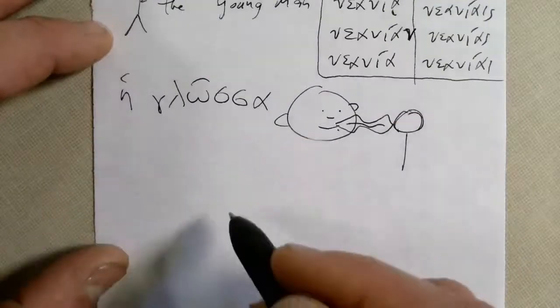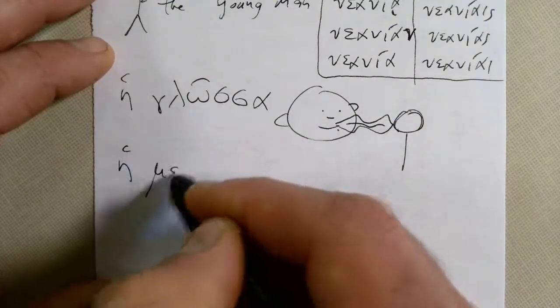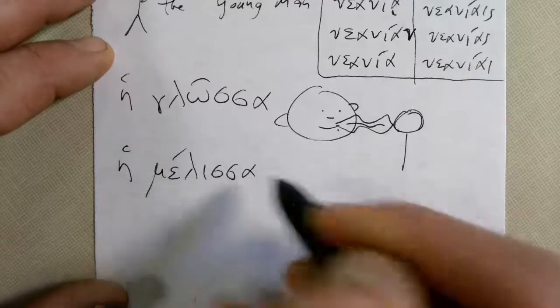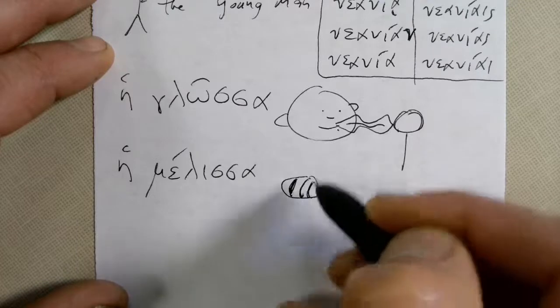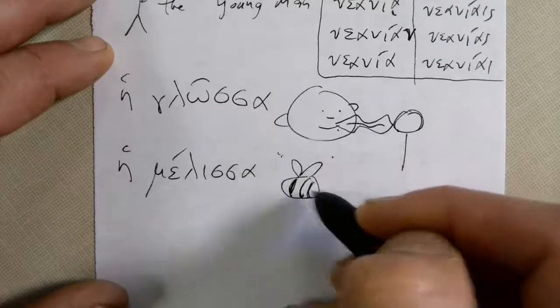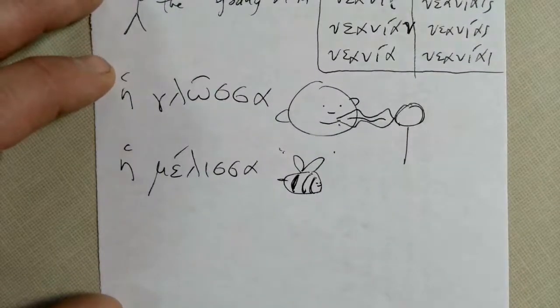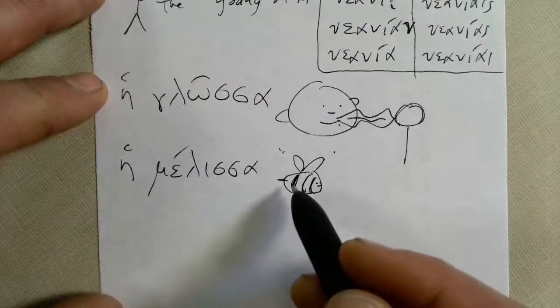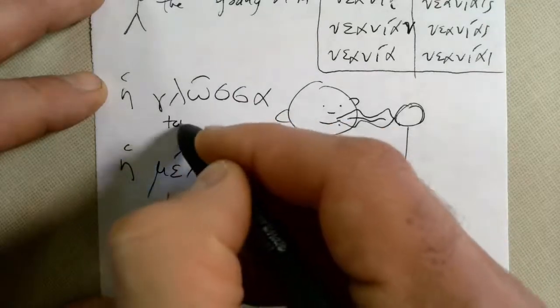Yglosa. Now this little guy, Melissa. Melissa is a bee. I'll draw this little stinger. Oh he's a happy Melissa. So Melissa is bee, and glosa is tongue.